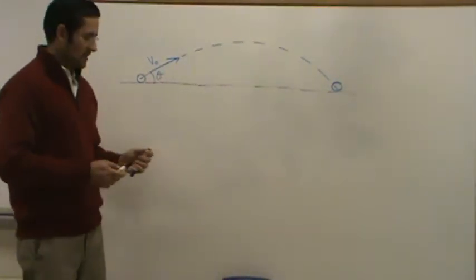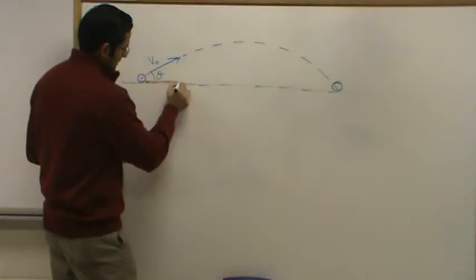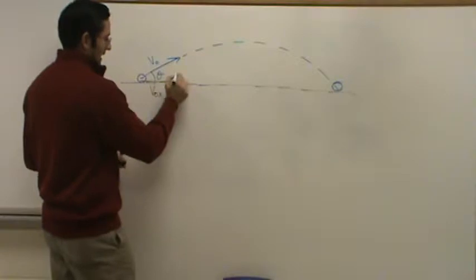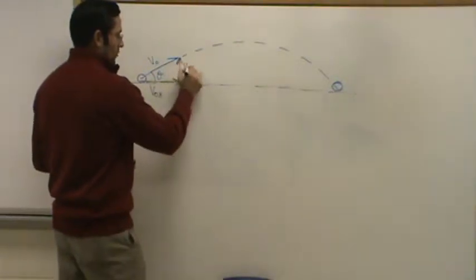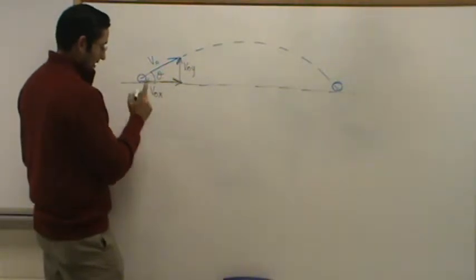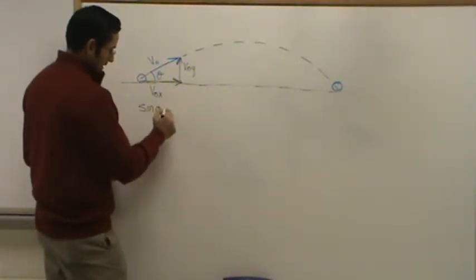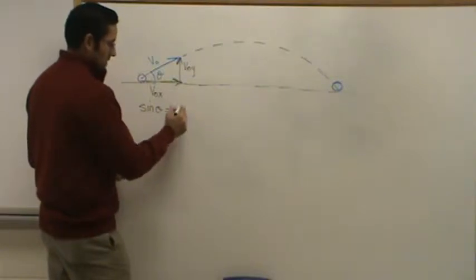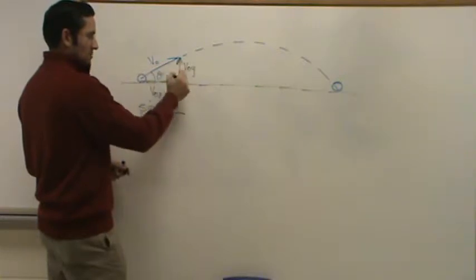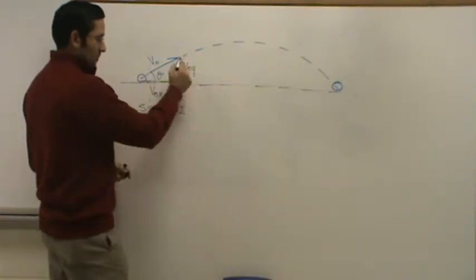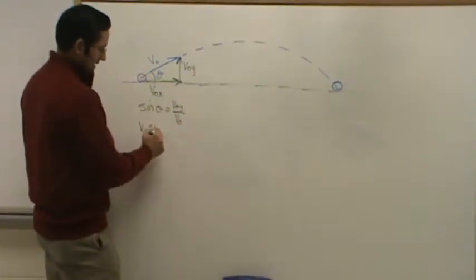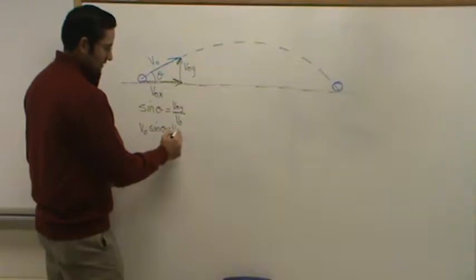Let's find those values. Break up your vector V naught into its x component, V naught x, and its y component, V naught y. You're going to use your trig functions. Sine theta equals opposite over hypotenuse, so V naught y is my opposite side and my hypotenuse is V naught. Bringing V naught over, V naught sine theta gives me my V naught y — my initial velocity times sine of the angle equals initial vertical velocity.